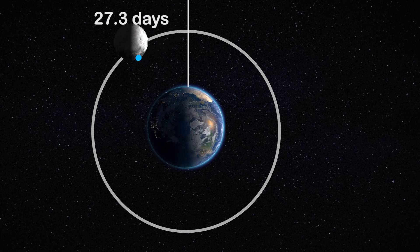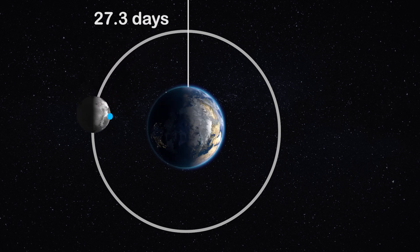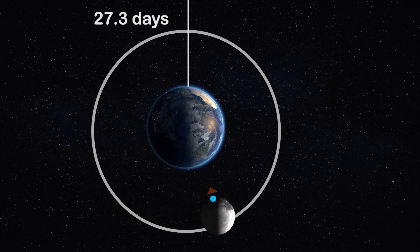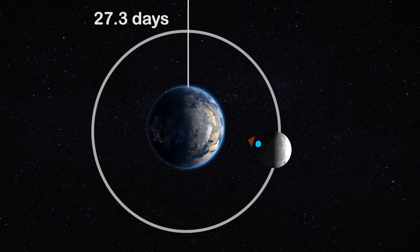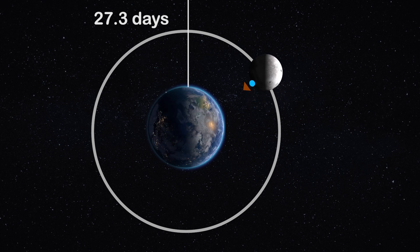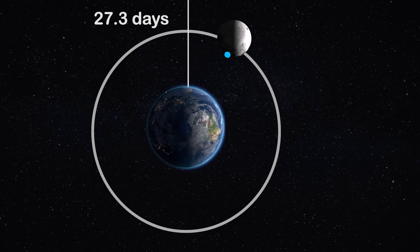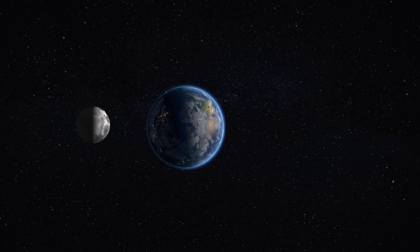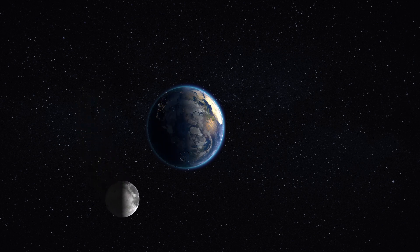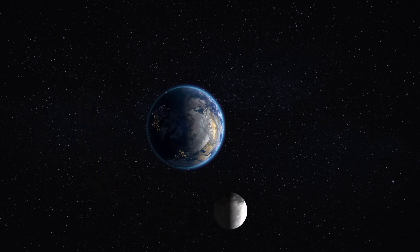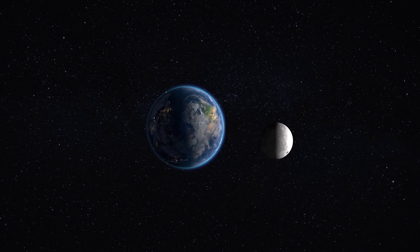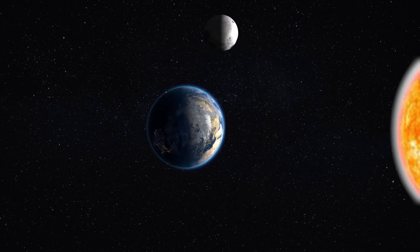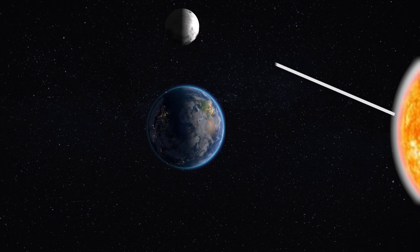Because of this peculiarity, always one side of the Moon is visible from Earth — we never see the other side of the Moon from the Earth. One more thing to remember is that the Moon does not have its own light and it becomes visible only when the light from the Sun reaches its surface.